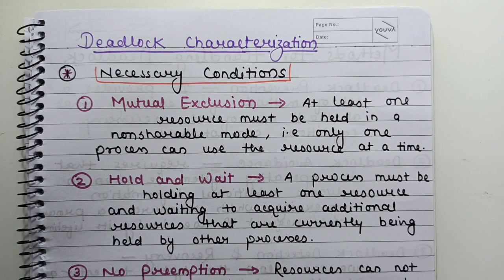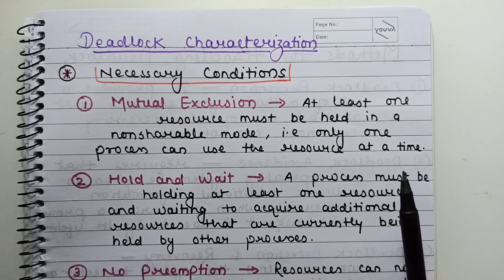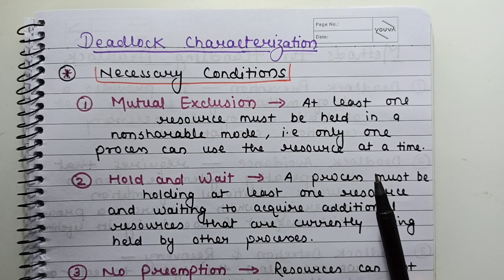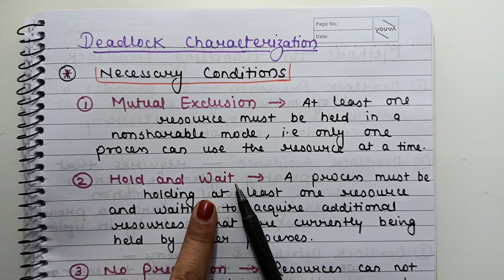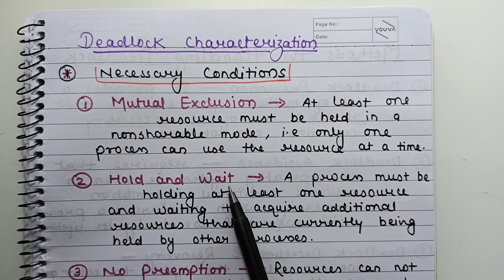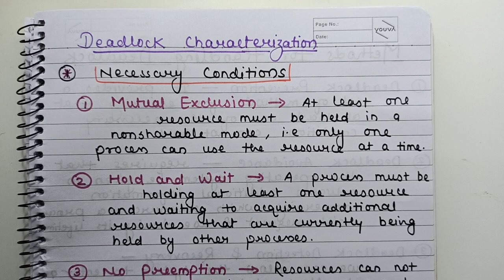The next condition is hold and wait. If a process is holding some resources and waiting for additional resources — resources that are held by another waiting process — it cannot complete execution. If processes hold some resources and wait for other resources that are also being held by other waiting processes, this creates a deadlock situation where a set of processes are waiting for each other to release resources.